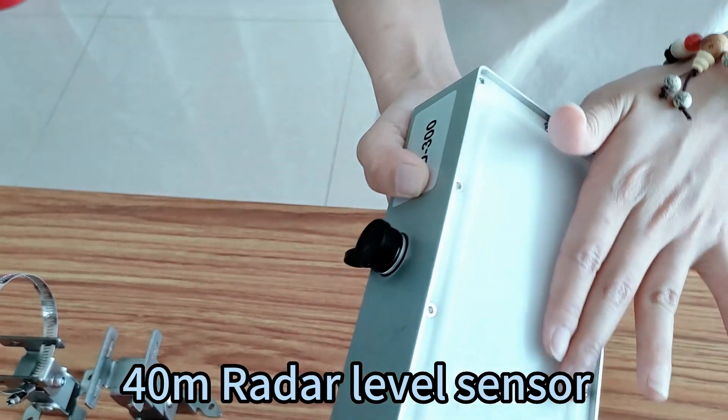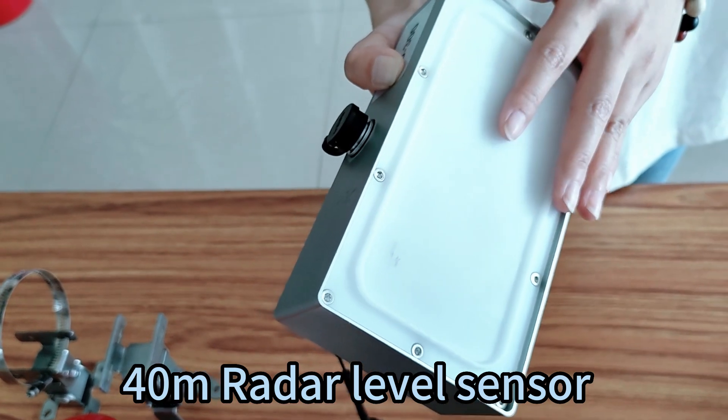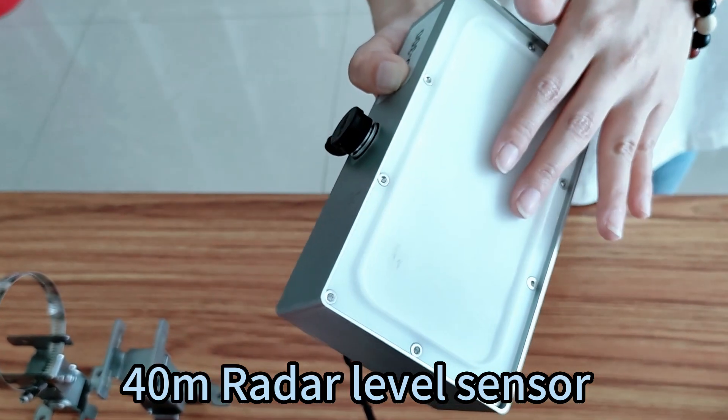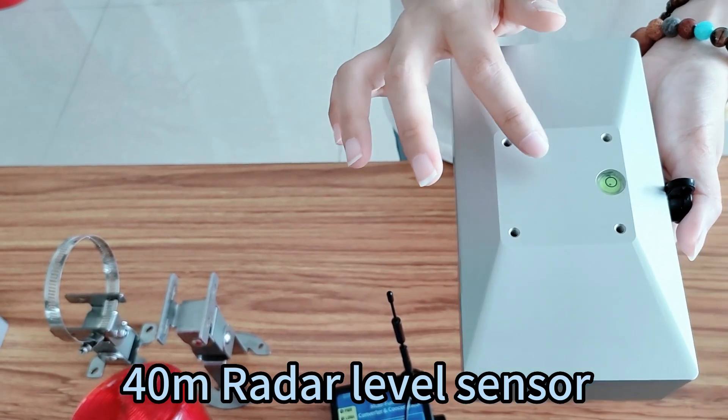It has a built-in radar. The radar calculates the liquid level by receiving and returning radar waves. Remember that the horizontal bubble remains level when in use.